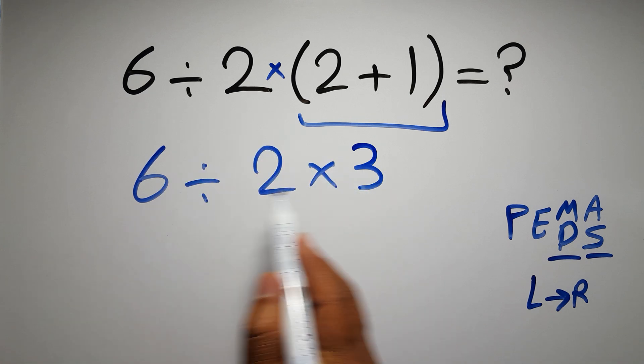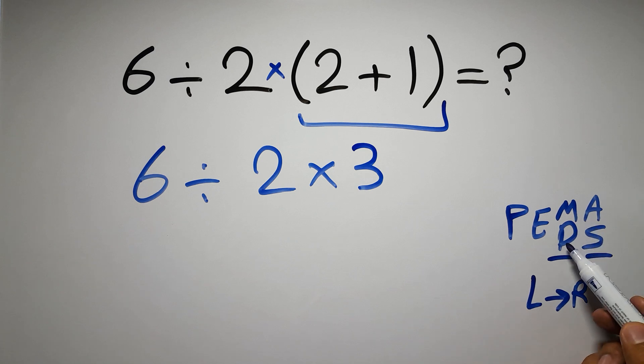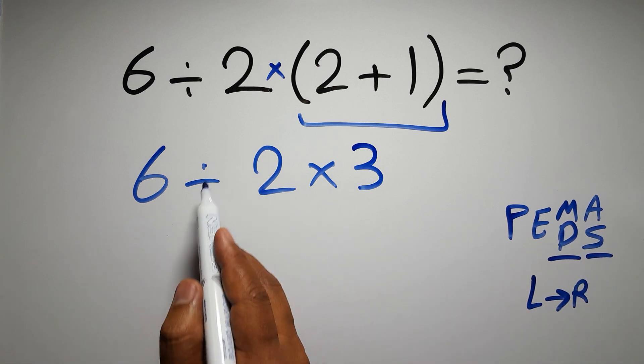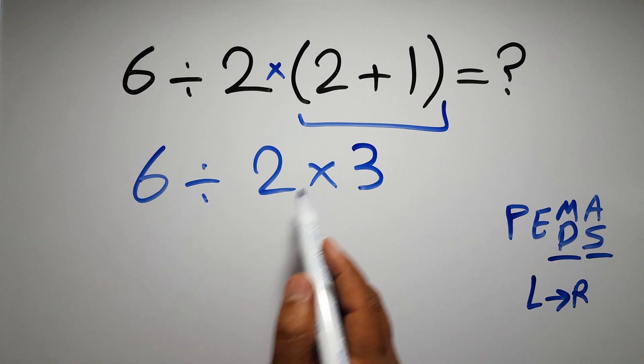Now we have one division and one multiplication. As I said, multiplication and division have equal priority, and we have to work from left to right. So here, first we have to do this division, not this multiplication.